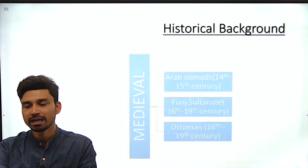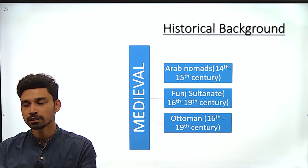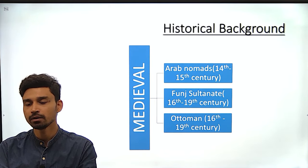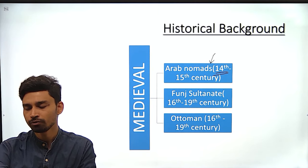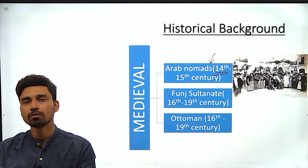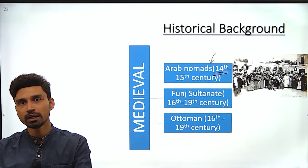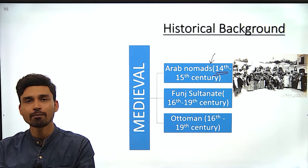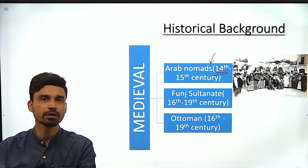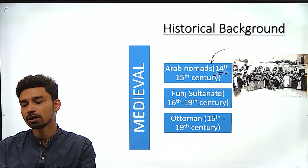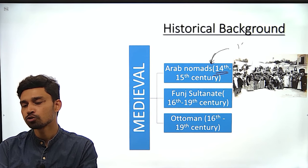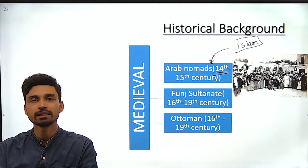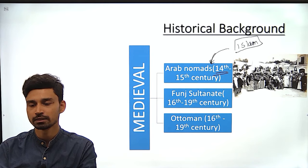Coming to the medieval ages, another significant development was that Arab nomads started to settle in Sudan from somewhere between the 14th to 15th century. Arab nomads trace their origin from the Arabian Peninsula; they are a nomadic people mostly engaged in herding camels and goats, moving from region to region. They brought along their own distinct culture and traditions, and also led to the flourishing and dominance of Islam all over the Sudanese empire.